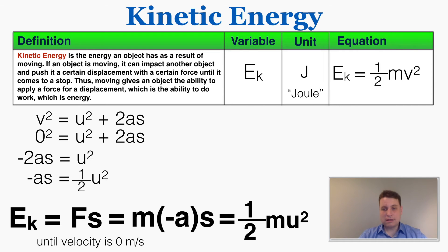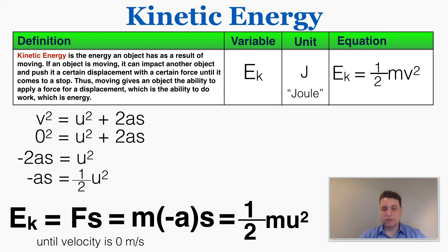Doing that substitution gives the equation for kinetic energy as used in physics: the kinetic energy of an object — the total amount of work it can apply as a result of moving — equals one half times its mass times its velocity squared. This is normally written as v rather than u, since it's not considered an initial or final velocity, just the velocity the object is moving with. So KE = ½mv², which is exactly the work the object can do based on its mass and velocity.